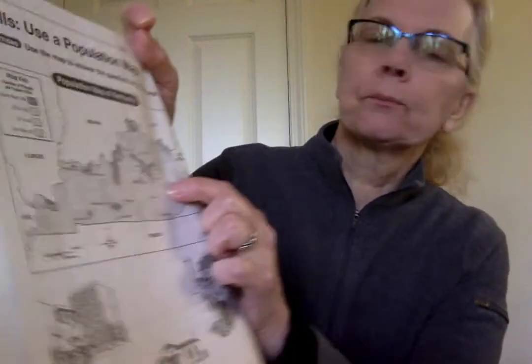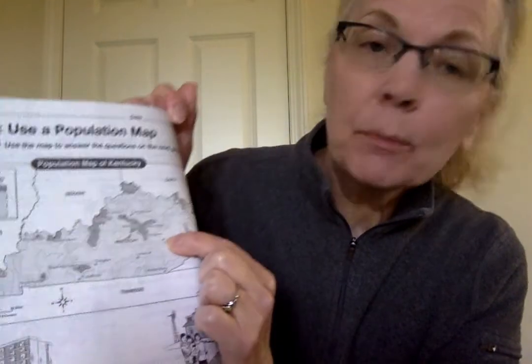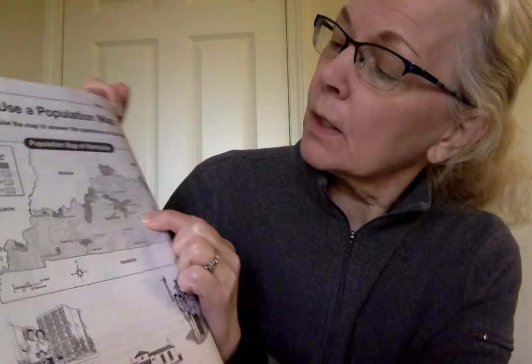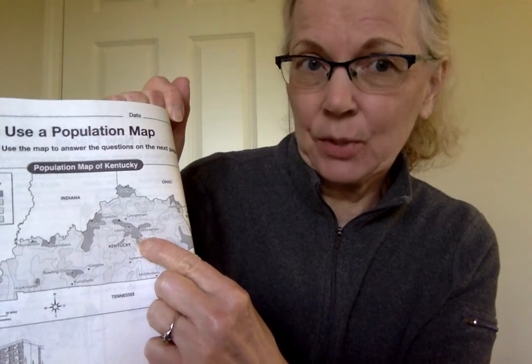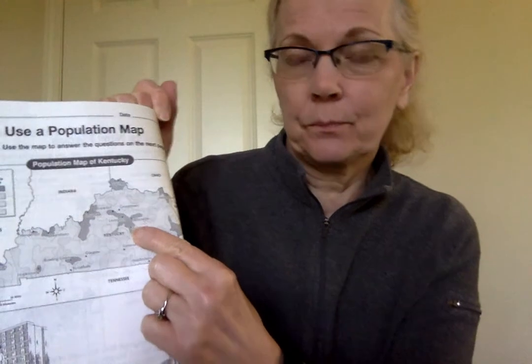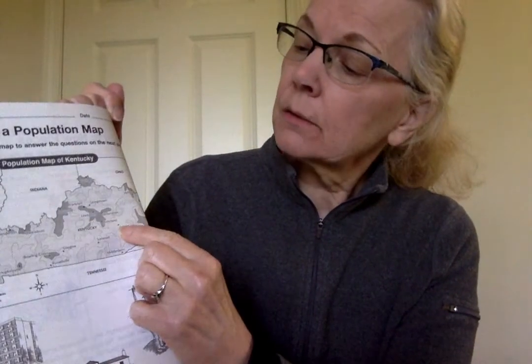Number five: which city has a lower population density — Jackson or Richmond? We have to find both. Jackson is right here in the polka dots. Richmond is over here in the dark gray. Which one has the fewer people — Jackson or Richmond? Think about what those shadings represent from the map key.